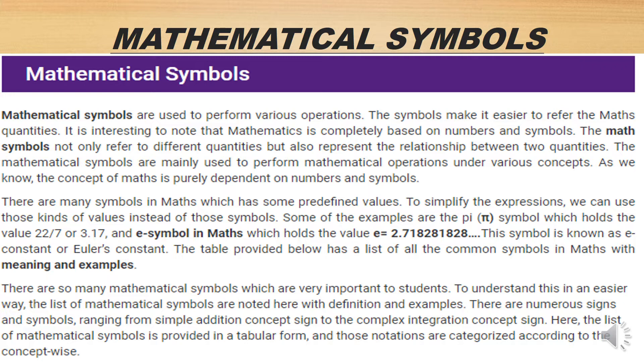There are many symbols in math which have some predefined values. To simplify expressions, we can use those values instead of those symbols. One example is the symbol pi, which holds the value of 22/7 or approximately 3.14159... This symbol is also known as a constant, or Euler's constant.